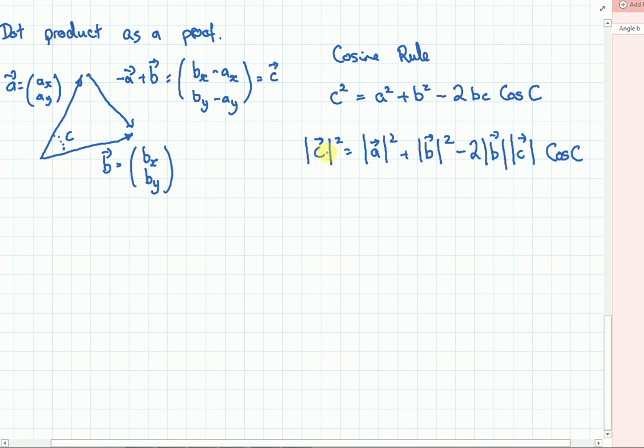It's the C part that becomes important. So C is this vector BX minus AX. So to calculate the modulus of C squared.